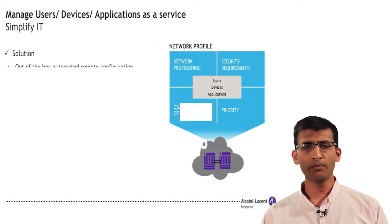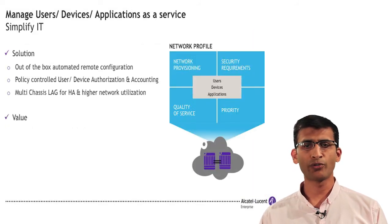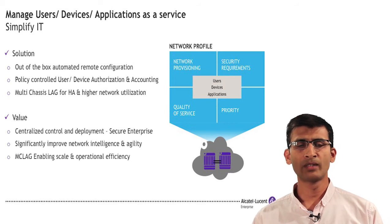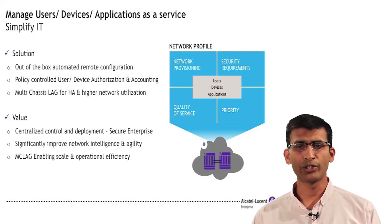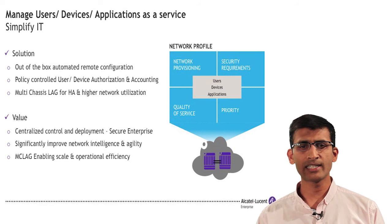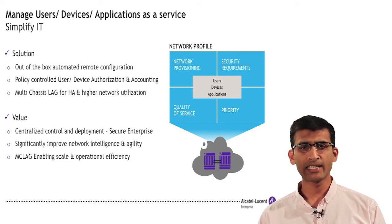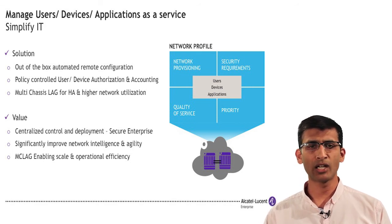The OmniSwitch 9000E simplifies IT with support for remote auto configuration, centralized visibility and policy control for users, devices and applications using OmniVista. Multi-chassis LAG provides higher resiliency and network utilization with reduced management complexity.